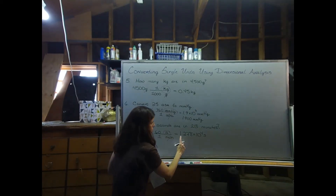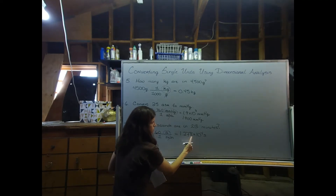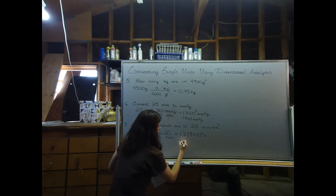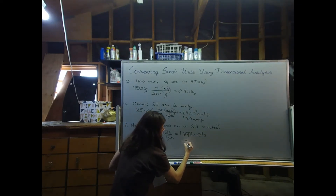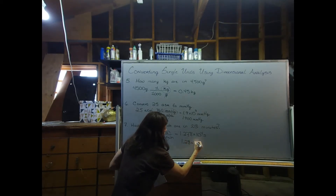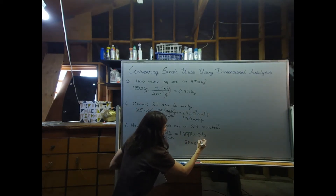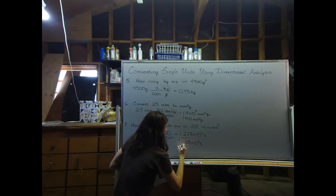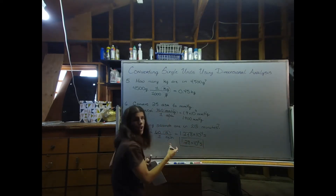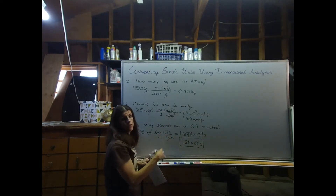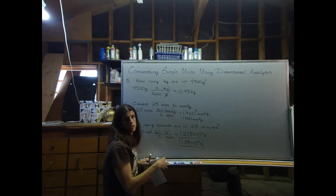Counting to three sig figs: one, two, three — we end at the seven, but the eight rounds it up. So the final answer is 1.28 times 10 to the fourth seconds, which is the correct answer after sig figs are considered.